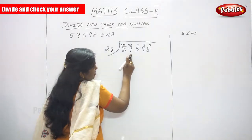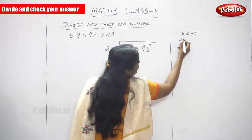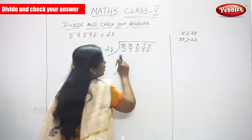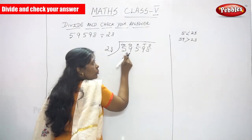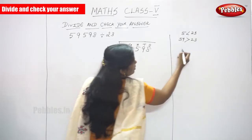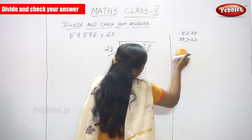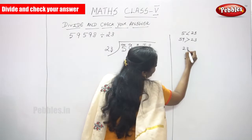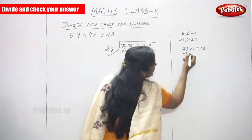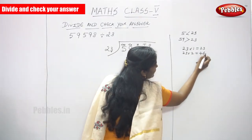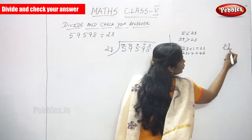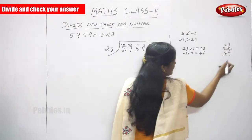So, what is the next digit? 9. So, 59 is greater than 23. Now, you can divide 59 by 23. How many times does it go? The divisor is 23. 23 into 1 is 23. 23 into 2, you can get 46. Otherwise, you can do like this: 3 twos are 6, 4 twos are 8 — so 46.